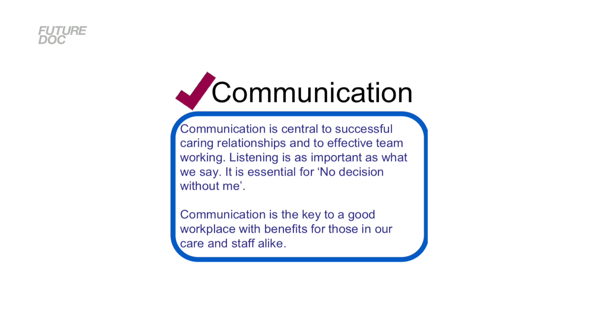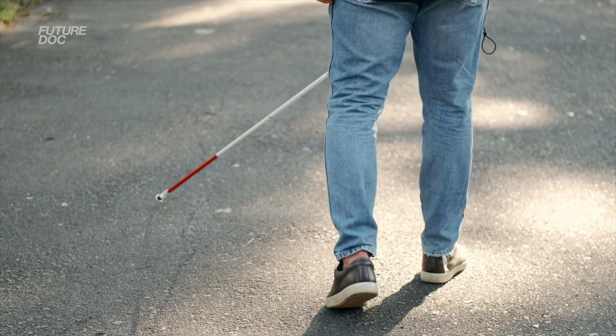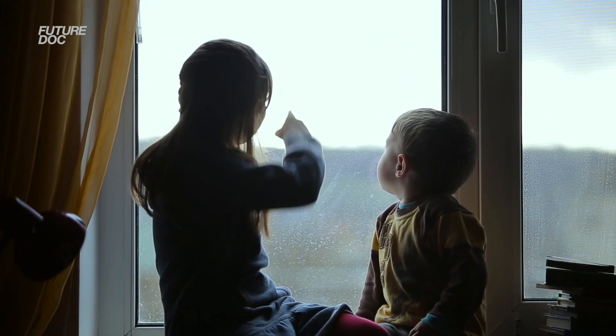For communication, the NHS says that listening is as important as what we say — it is essential for 'no decision without me,' meaning we need to involve the patient with their care. Ways to show alignment with communication include tricky communication situations, such as encountering people with difficulty communicating — people with dementia, hearing or visual difficulties, or young children — and explaining how you adapted your communication style to fit that particular need.